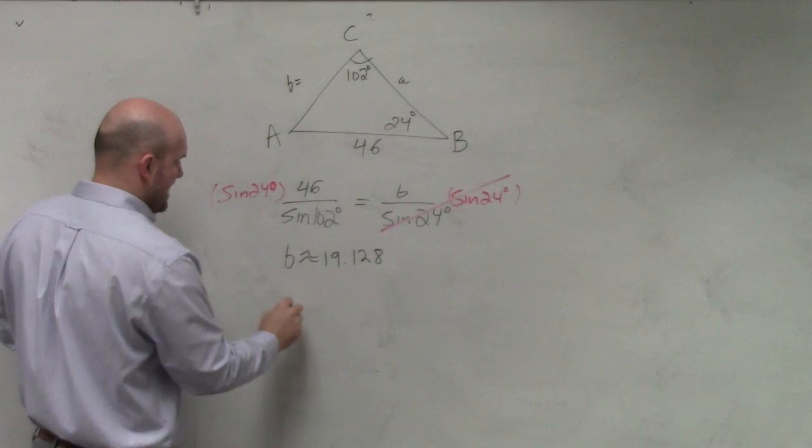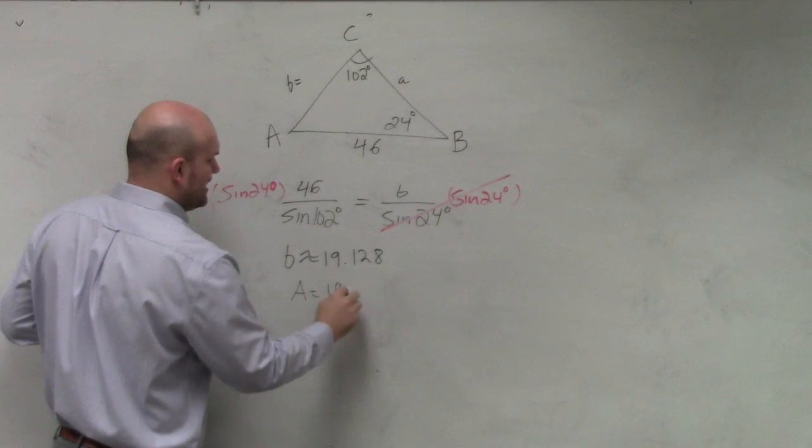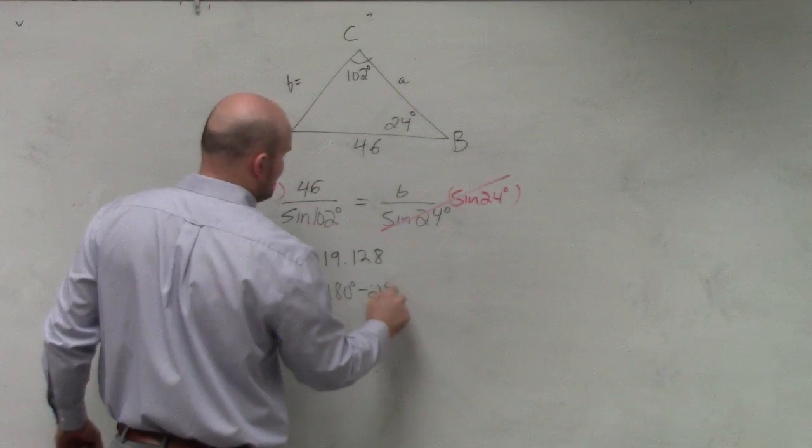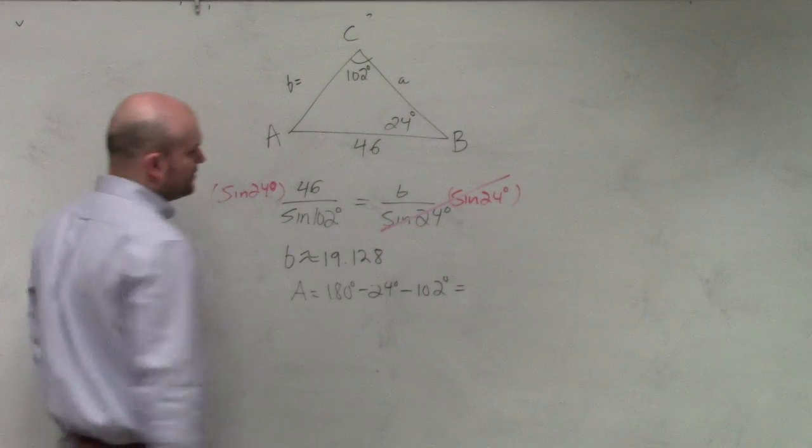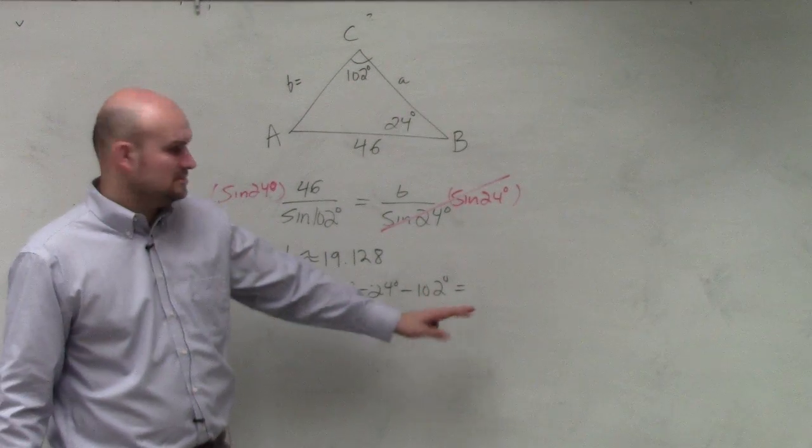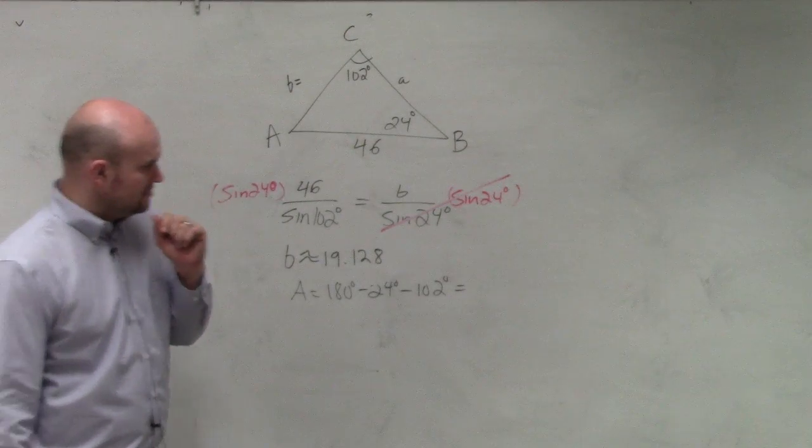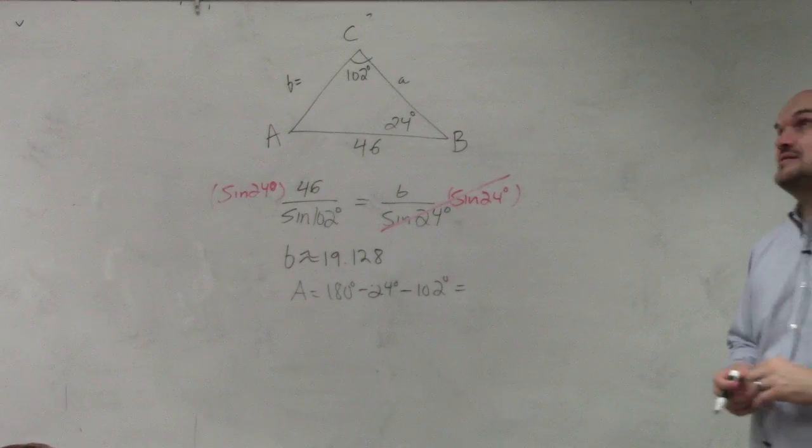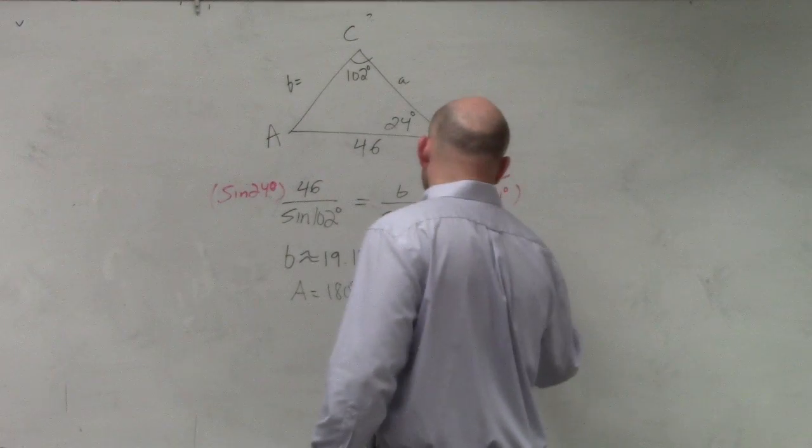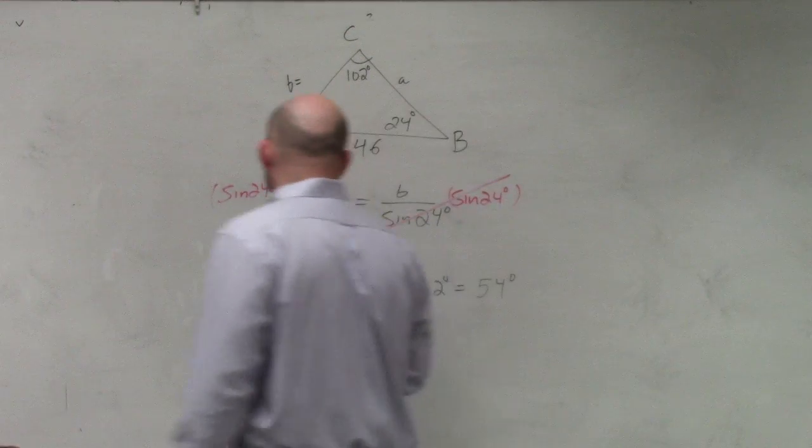So you can say A is equal to 180 degrees minus 24 degrees minus 102 degrees. So therefore, A equals 54 degrees. So now, typically, what I would recommend...